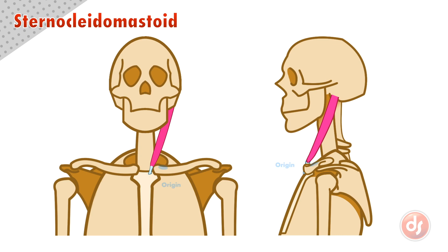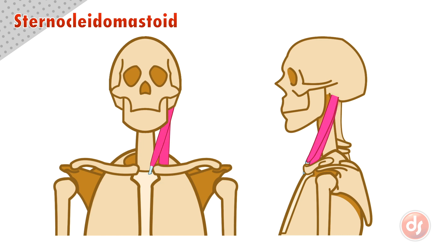The second head originates on the top edge of the clavicle, on the inner third. The muscle also comes up to insert under the first head at the mastoid process.